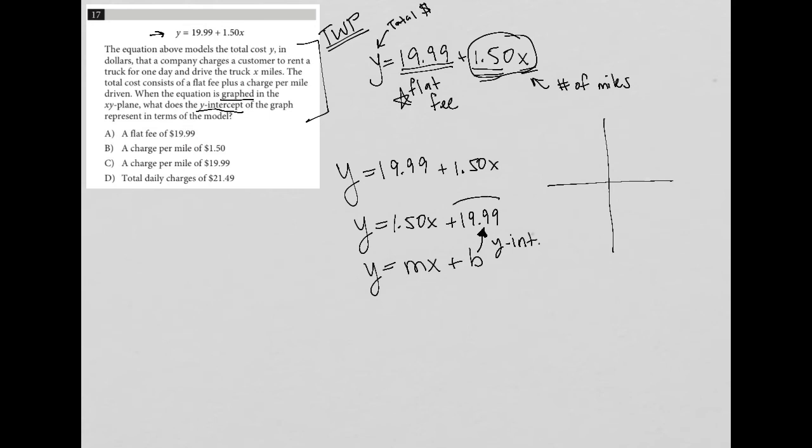So we know that this $19.99 is the y-intercept. And we also know from our translation that that represents the flat fee you pay before you drive any miles. So if I were to graph this, I'd have a point on the y-axis that corresponds with 19.99. This is one mile, two miles, three, four, and so on. I'm going to pay this amount even before I drive any miles at all.